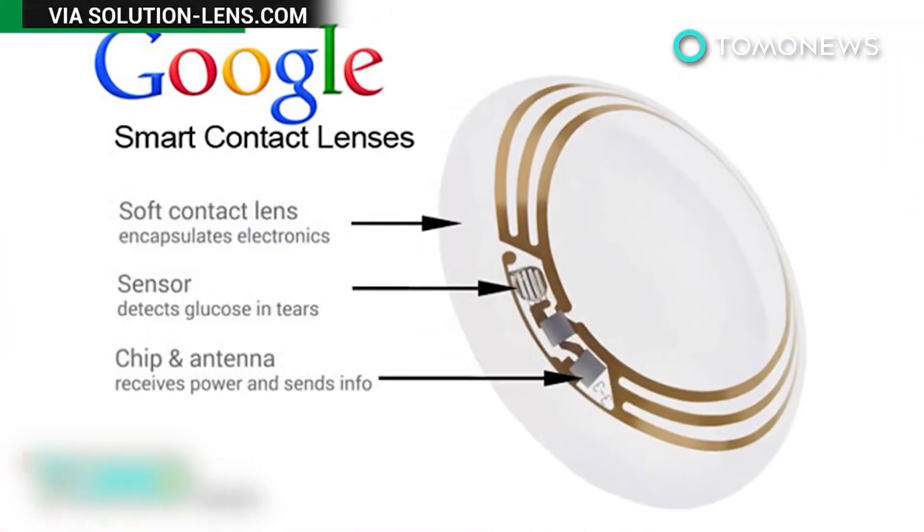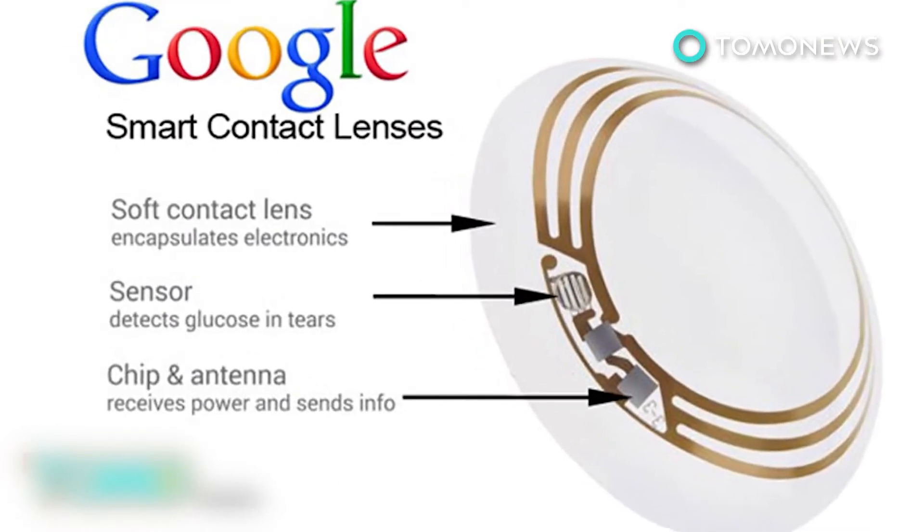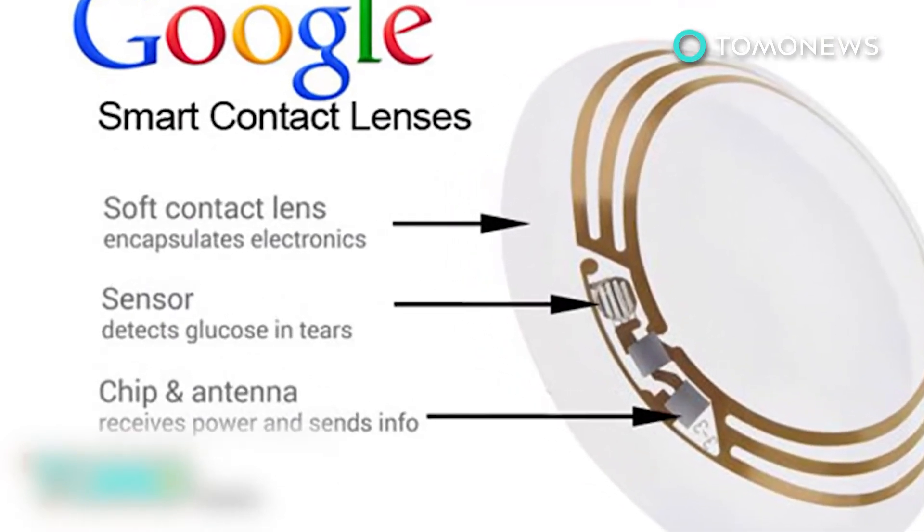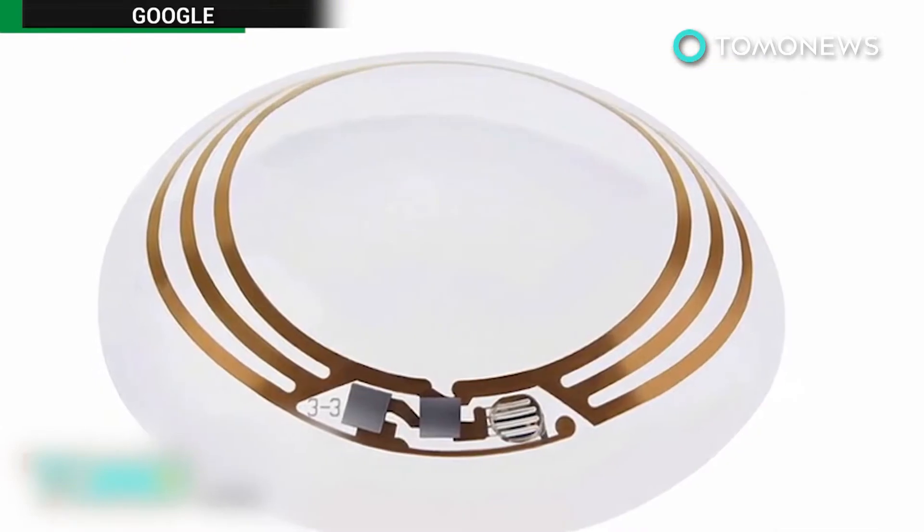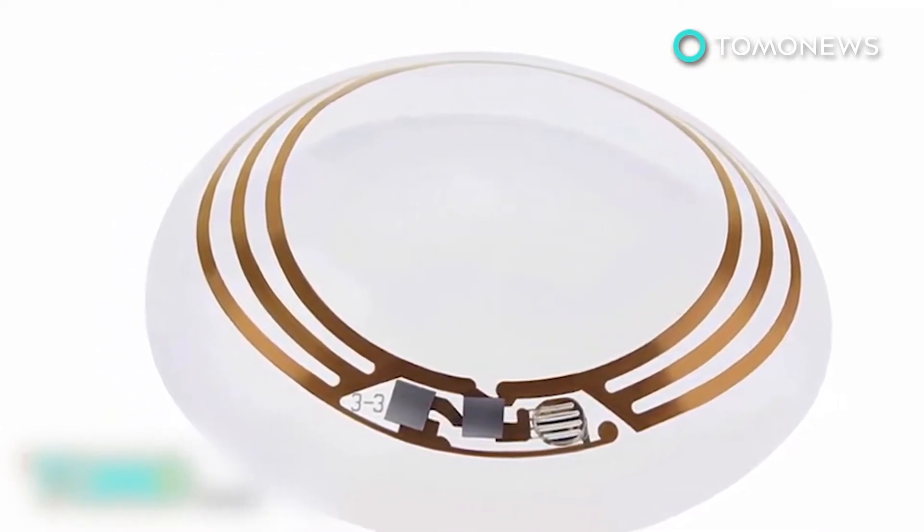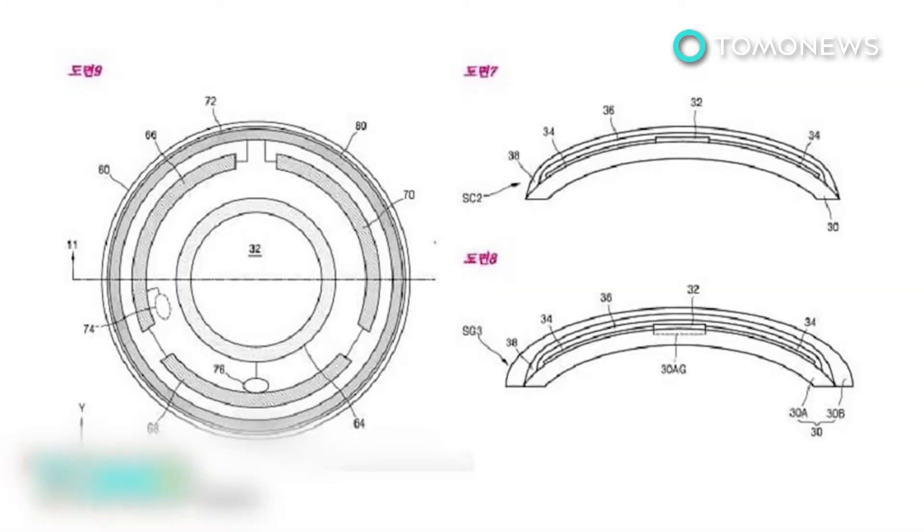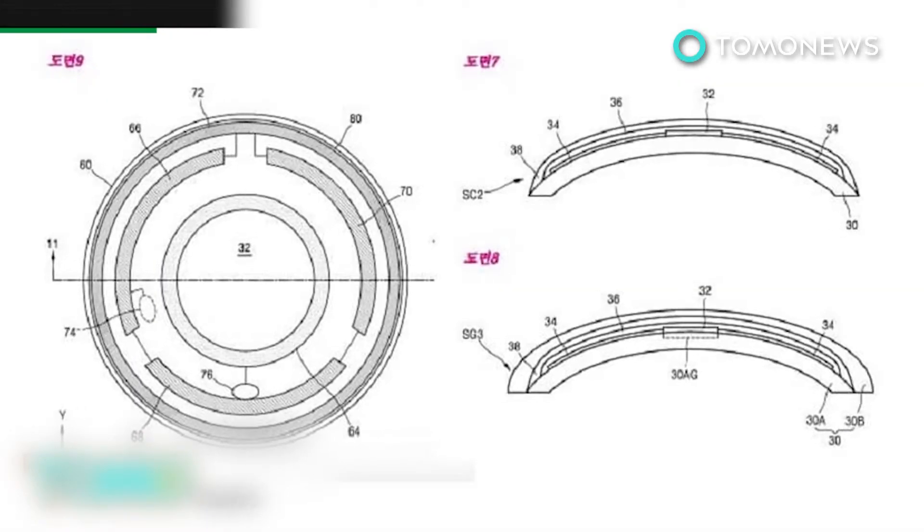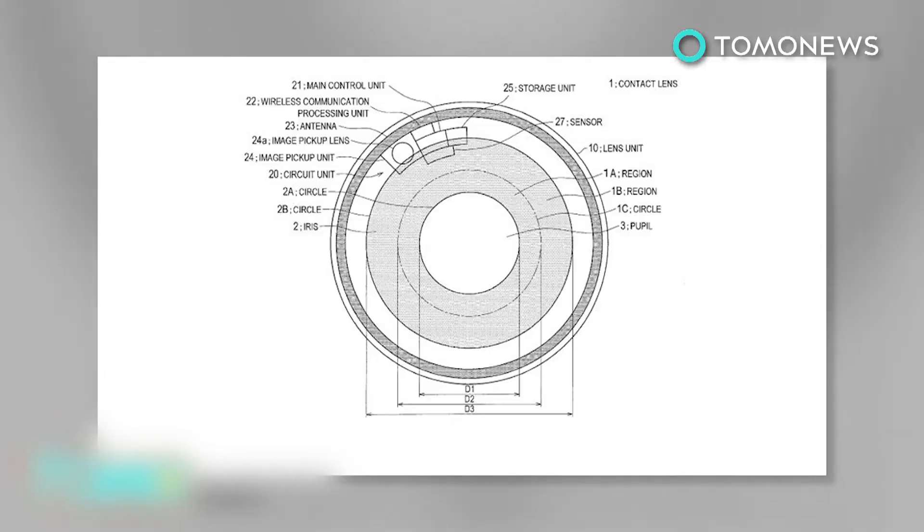The news that Sony has been working on this technology for several years follows a trend set by Google and Samsung. In 2014, Google revealed a high-tech lens to help diabetics measure glucose levels in their tears. Samsung unveiled plans for a smart contact lens that houses a tiny camera. It seems the time when anything and everything can be filmed on the sly is not too far away.